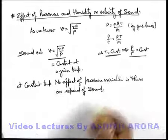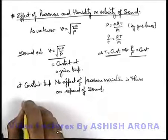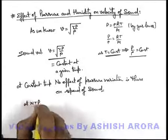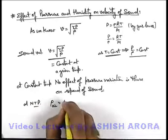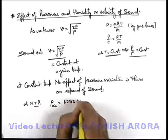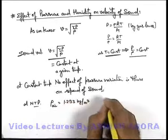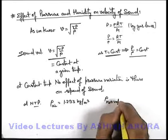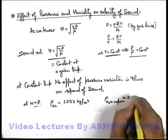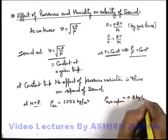Along with this, one more thing we can see, that at normal temperature and pressure, density of air is taken as 1.293 kilogram per meter cube. And density of water vapor, H2O vapor, this is 0.8 kilogram per meter cube.